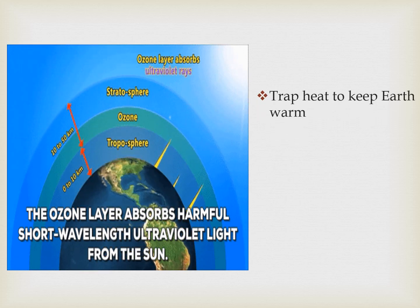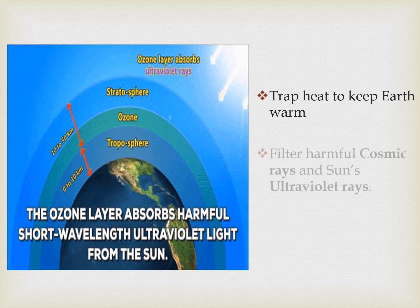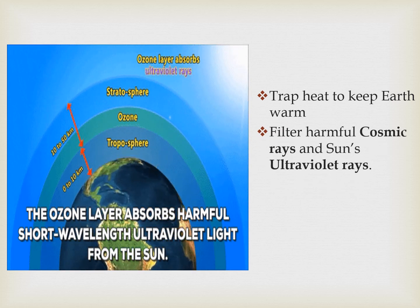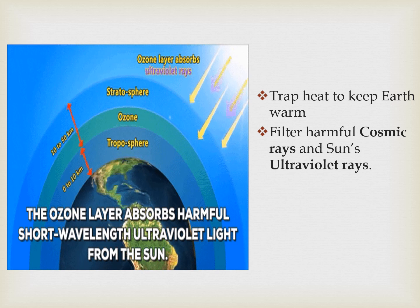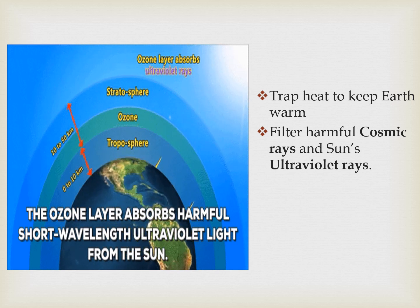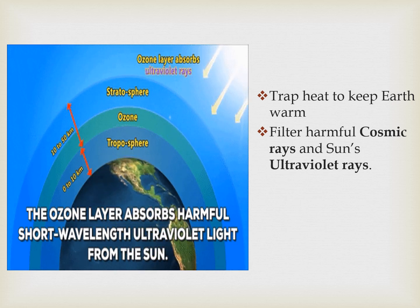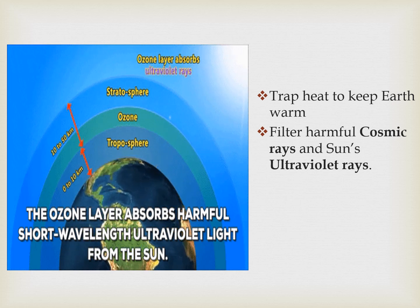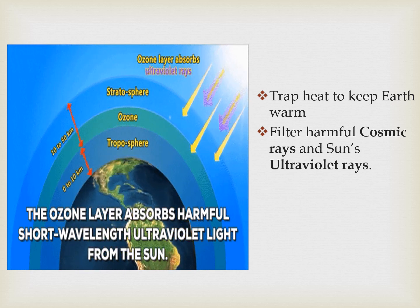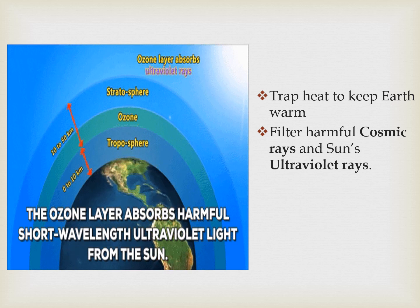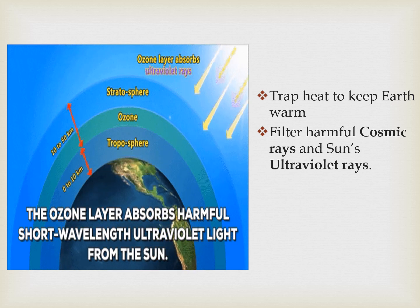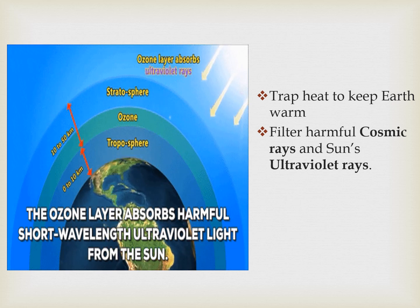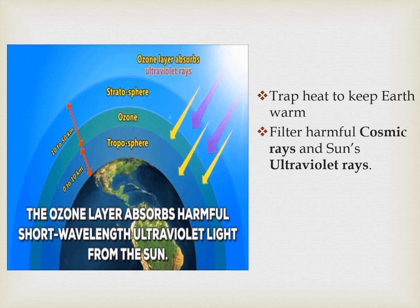Any changes in the lower layers — the troposphere and stratosphere — cause weather phenomena like wind and storms. The atmosphere filters very harmful cosmic rays and the sun's ultraviolet rays. Cosmic rays are very harmful rays in space, and if they reach the surface of the earth, they destroy the DNA of living things. That's why the atmosphere filters these cosmic rays and harmful ultraviolet rays from reaching the surface of the earth.